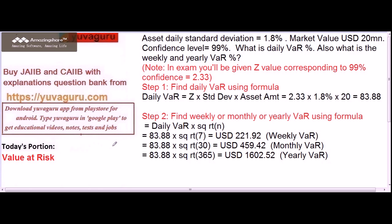Let's start the problem. The daily standard deviation is 1.8%, the market value of the portfolio is USD 20 million, and the confidence level is 99%. We have to find out daily VAR percentage and then weekly and monthly. Remember, it is done in two steps — first start with daily. In the exam, if daily VAR is given, no need to do step 1; if not given, we have to do step 1.